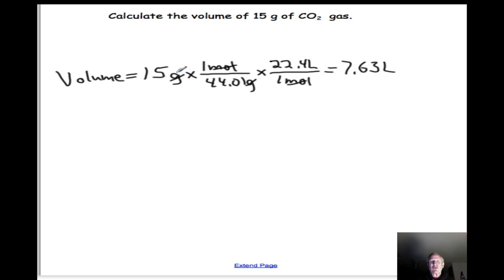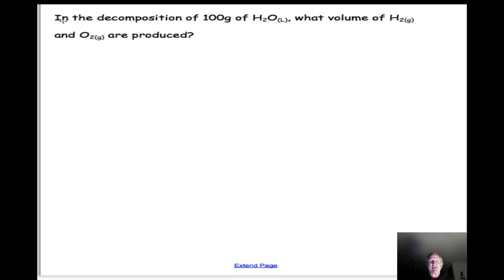Now with this as our warm-up, let's take a look at a stoichiometry problem. In the decomposition of 100 grams of water, what volume of H2 gas and O2 gas are produced? We always begin our stoichiometry problems by writing and balancing the equation. The decomposition of water requires electricity as a source of energy to produce H2 gas and O2 gas.